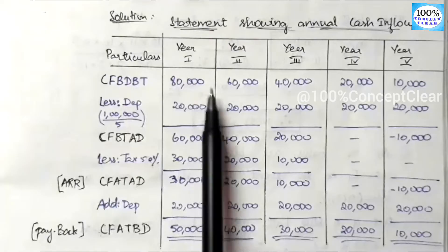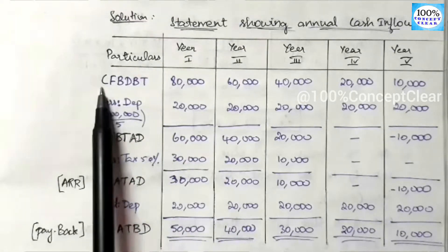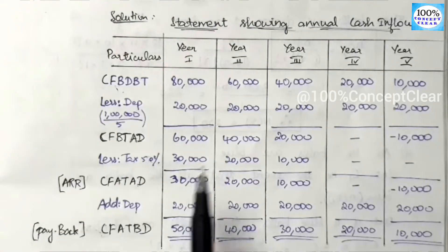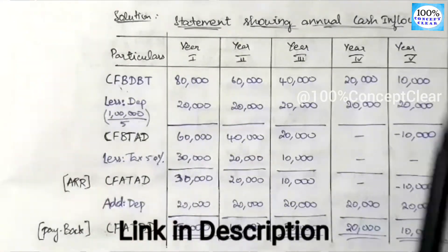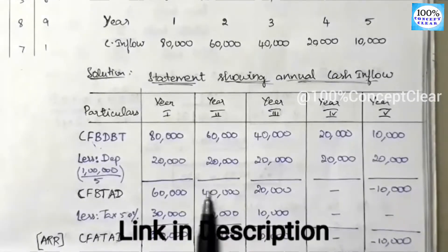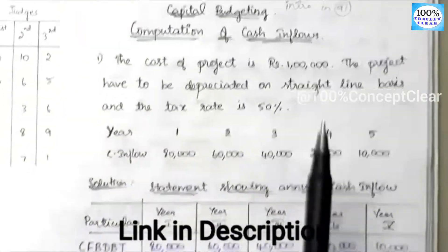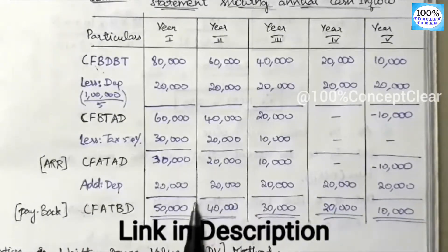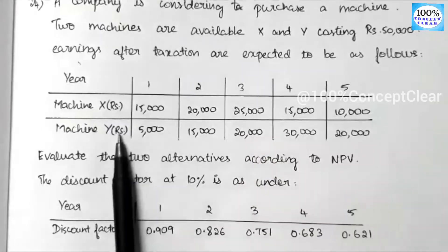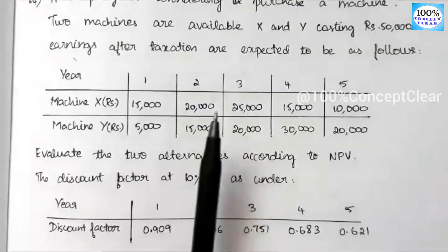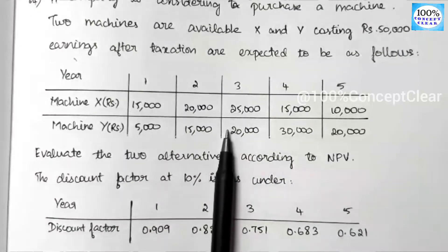What is the cash inflow at this stage? What is cash flow before tax and before depreciation? We have already explained this in a video in the capital budgeting playlist in the description. Check that for detailed explanation. Here, we have all values in cash flow after tax and before depreciation, so we can use them directly.